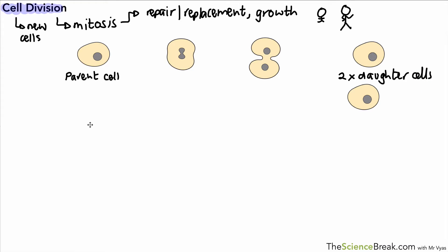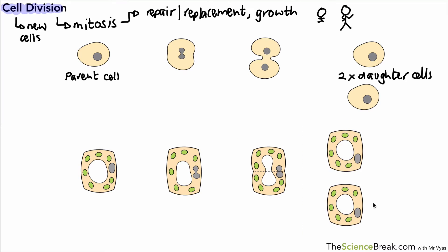Those two cells at the end are called daughter cells. It's not just one single process; it's a cycle that continues all the time. It also happens in plant cells. The process is very similar with just a few minor differences, but we start with parent cells and end up with daughter cells in plants as well.